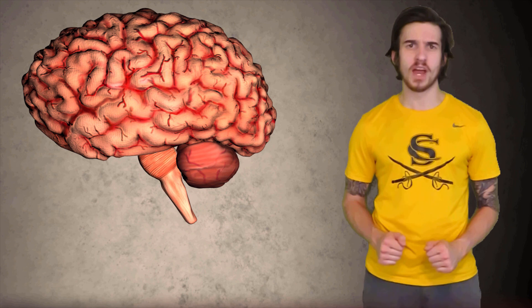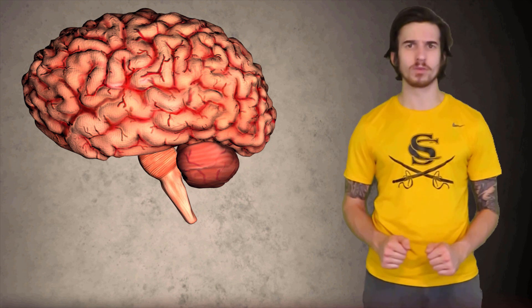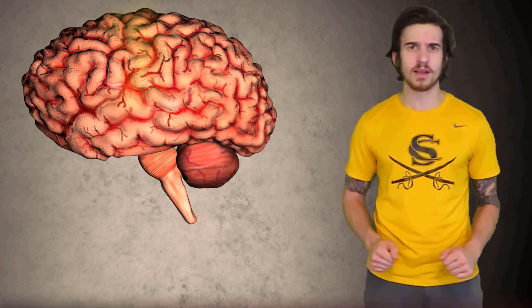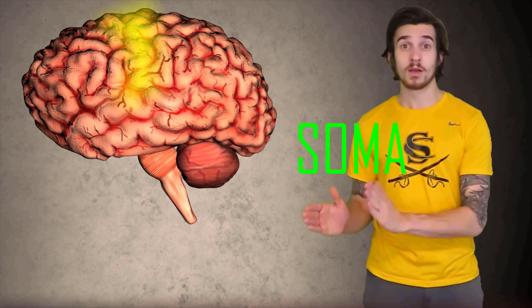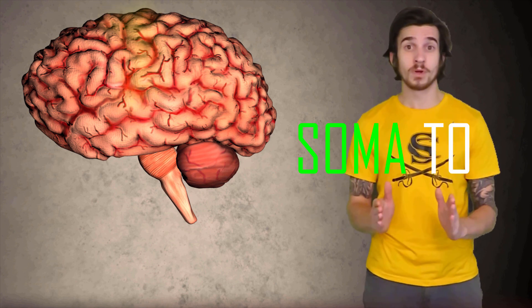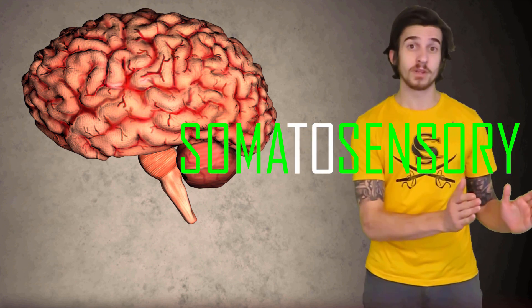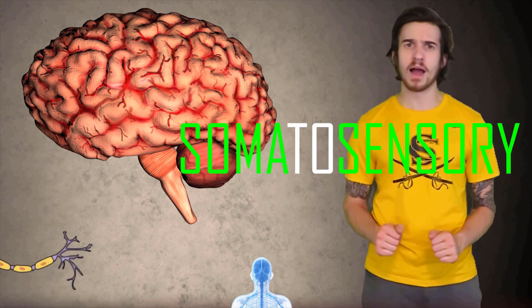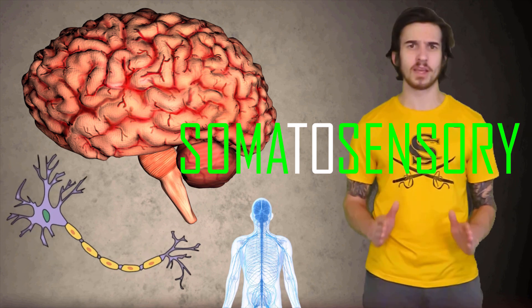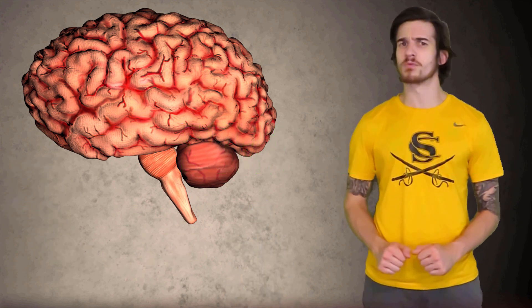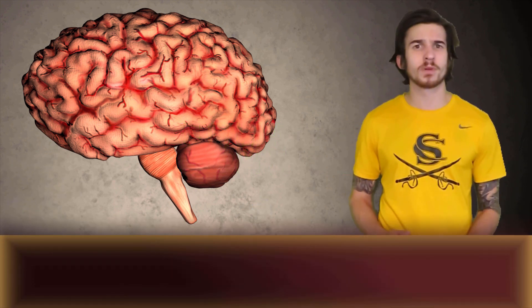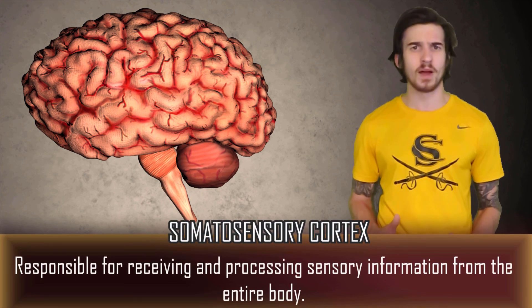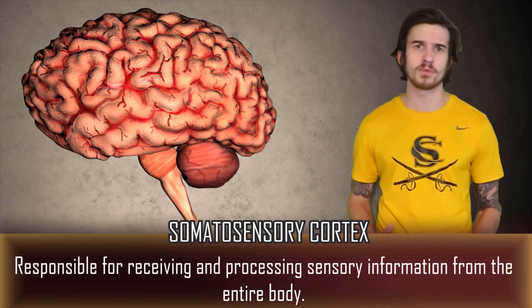Located in the post-central gyrus of the parietal lobe, we have the somatosensory cortex. Breaking down the word: soma means body. The somatosensory cortex is responsible for receiving and processing sensory information from all over the body — the function is right there in its name.